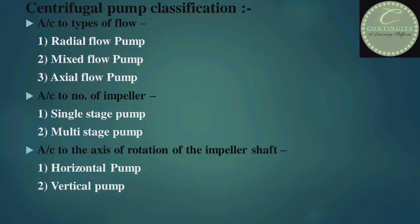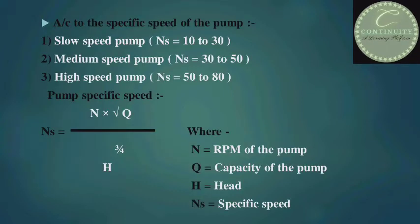According to specific speed: first, slow speed pump — its specific speed lies between 10 to 30; second, medium speed pump — its specific speed lies between 30 to 50; and third, high speed pump — its specific speed lies between 50 to 80. The formula for specific speed is: N_s = N × √Q / H^(3/4), where N is the RPM of the pump, Q is the capacity or discharge, and H is the head developed by the pump.